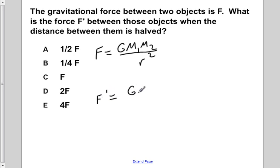So we still have the gravitational constant, m1 is the same, m2 is the same, but now we have one half of r and we square that entire thing.